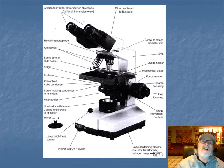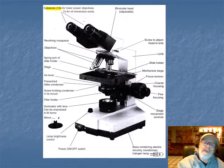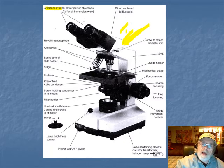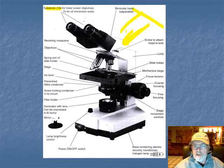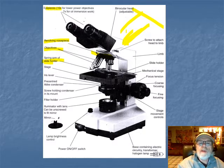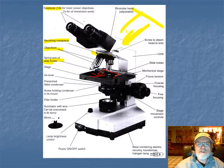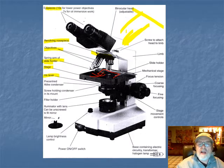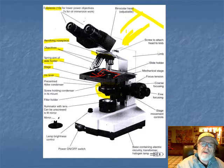Here's another diagram showing the same components. The eyepieces or oculars are 10 power. Sometimes the head of a binocular microscope may actually rotate around, so you can have the oculars pointing in different directions - some of these will rotate and be adjustable that way. We see the revolving nosepiece that clicks into place with the objectives, the spring arm of the slide holder where you pull the bar back and put the slide in, then let it come back to hold the slide in place.